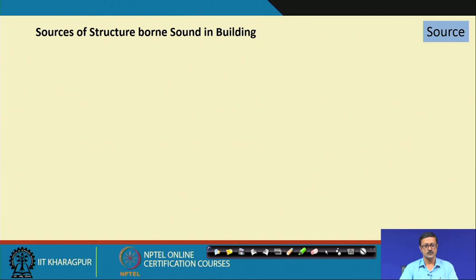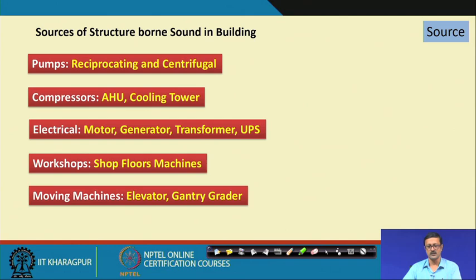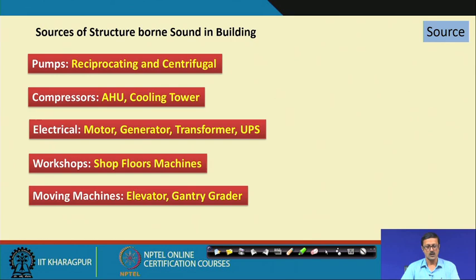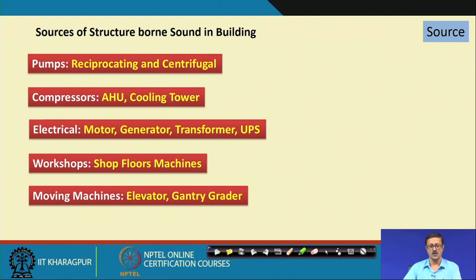The different sources of structure-bound sound in a building include pumps — reciprocating or centrifugal — compressors for cooling towers and air handling units, electrical motors and generators, workshops with shop machines, and moving machines like elevated gantry girders.